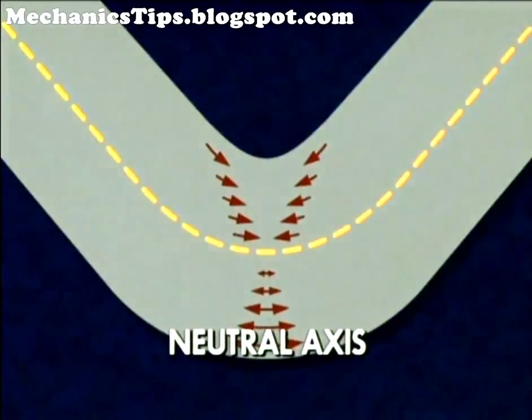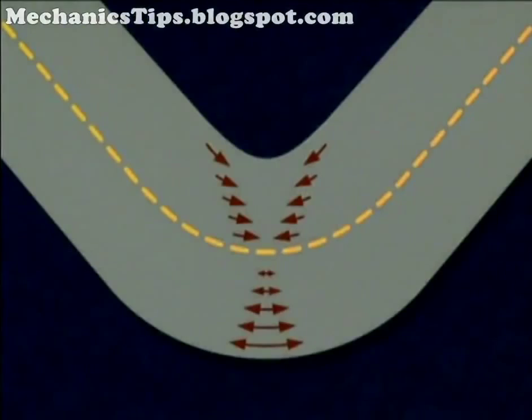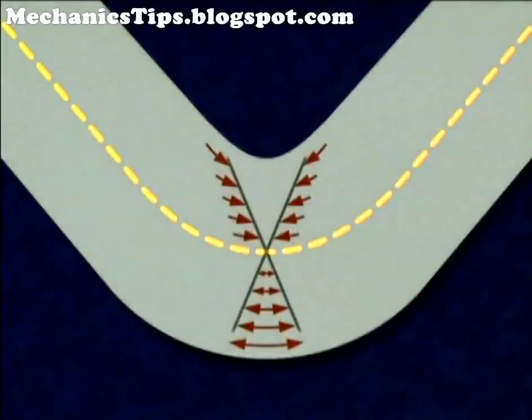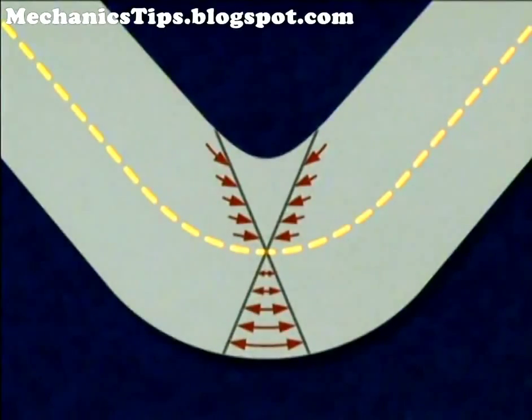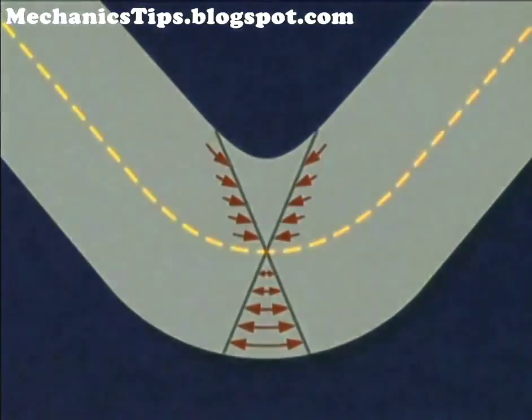The neutral axis is important since bending operations are calculated from its location. The extent to which a material deforms, whether in compression or tension, is proportional to the material's perpendicular distance from the neutral axis.